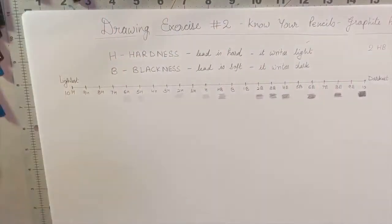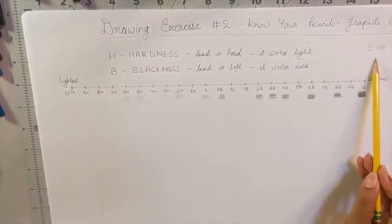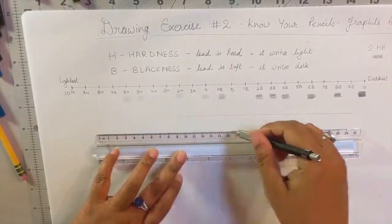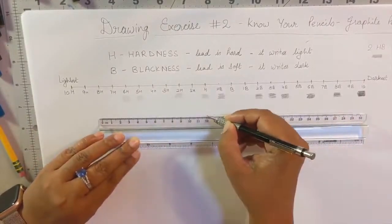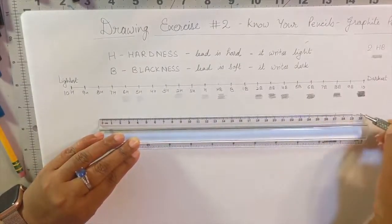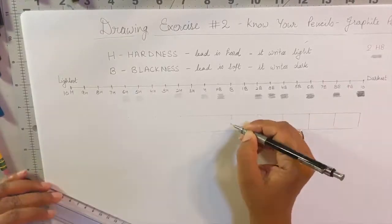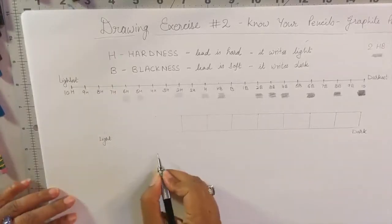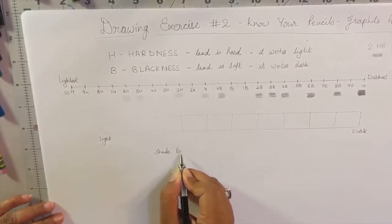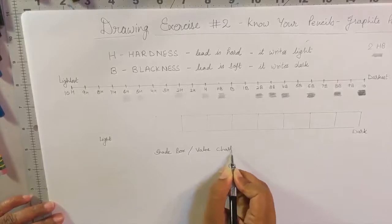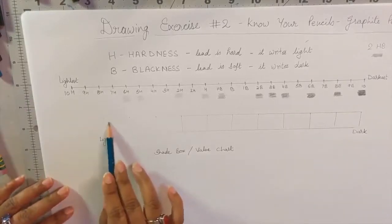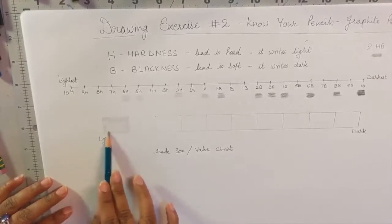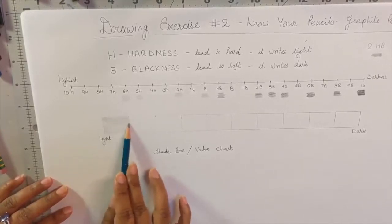As you go along with me in this tutorial, you will see a lot of examples and samples—how to choose the right pencil for what kind of artwork. Before we show any example, I'm just making this value chart. So I would suggest you also make this value chart to find out the gradient you can get from these pencils. I'm starting from light to dark.